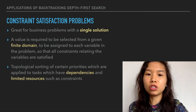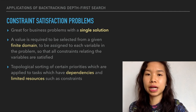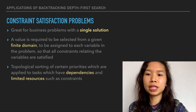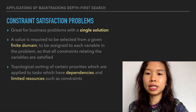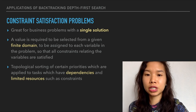It can also be used to schedule jobs from given dependencies among some job tasks. In computer science, applications of this type arise in instruction scheduling, also known as topological sort, where certain priorities are applied to tasks for which there are dependencies and limited resources such as constraints — thus the name constraint satisfaction problems.